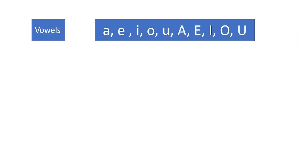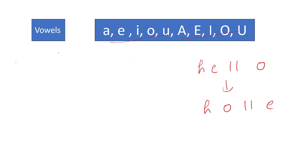Here I have taken one vowel container and stored both lowercase and uppercase vowel characters. Let's understand how 'hello' gets reversed to H, O, L, L, E. I will be using two pointers, I and J. I will point to the first index and J will point to the last index, which is N minus 1.